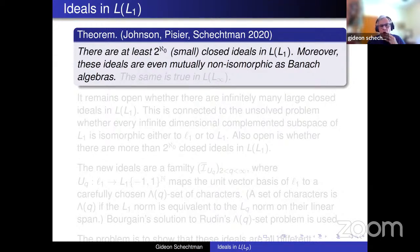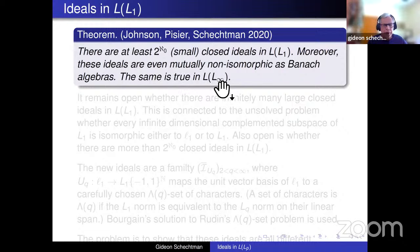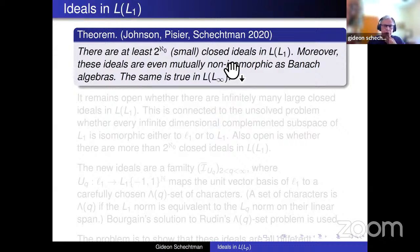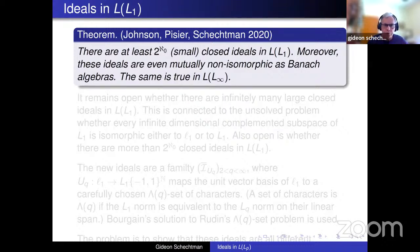One can do some duality here: the same turns out to be true also for ideals in L(L∞) — the bounded operators on L∞, which is no longer separable — and also on the operators on C([0,1]). The same theorem holds: there are a continuum of closed ideals which are different and even mutually non-isomorphic as Banach algebras.